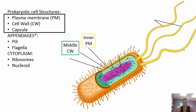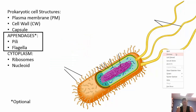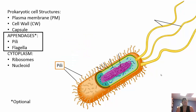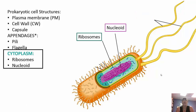A generalized prokaryotic cell has three layers: the plasma membrane on the innermost layer, the cell wall in the middle, and some prokaryotes have an outer capsule that protects the cell from being engulfed. Appendages include pili — short hollow tubes used for attachment — and sex pili used for conjugation to exchange genetic material. Flagella are whip-like structures used for motility, like tails. The only human cell with a flagellum is the sperm cell.